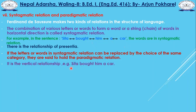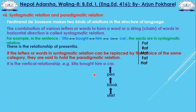Paradigmatic relation is a vertical relationship. In the sentence 'Sita bought him a car,' if you replace 'car' with 'pen,' 'book,' or 'scooter,' that vertical substitution is paradigmatic relation. Similarly, with words like 'sat,' 'pat,' 'rat,' 'mat,' 'fat,' 'hat' — replacing one letter while keeping the rest creates a paradigmatic relationship. The relationship between 'sat' and 'pat,' 'sat' and 'rat,' 'sat' and 'mat' — these are all paradigmatic relations.